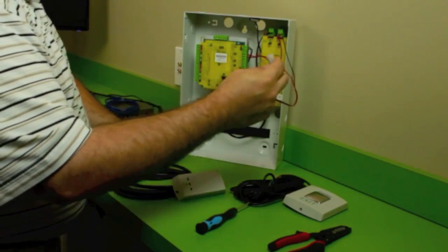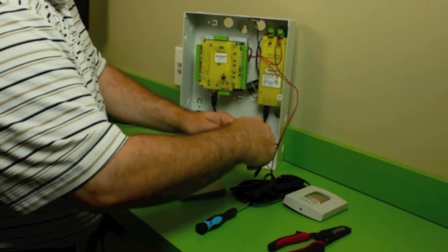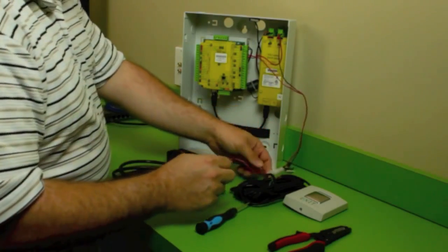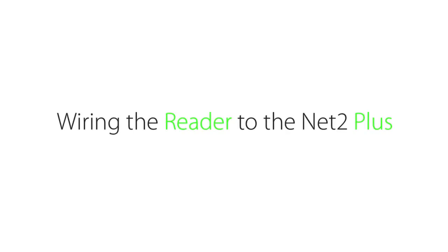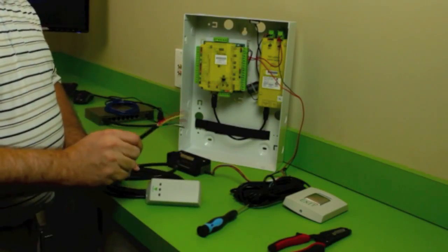And down at the door, most strikes have a connector like this, and it will plug right into your strike. Next thing we want to do, we want to wire in our card reader.